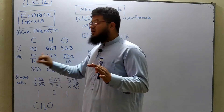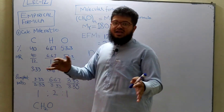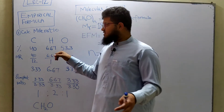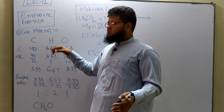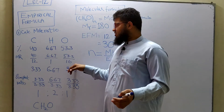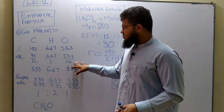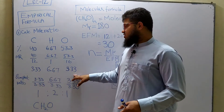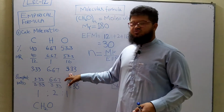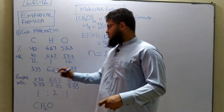So: assume 40% as 40 grams divided by 12 (the relative atomic mass of carbon); 6.67% of hydrogen divided by 1; and the oxygen percentage divided by 16. The answers obtained are 3.33 for carbon, 6.67 for hydrogen, and 3.33 for oxygen — this is the mole ratio for C : H : O.